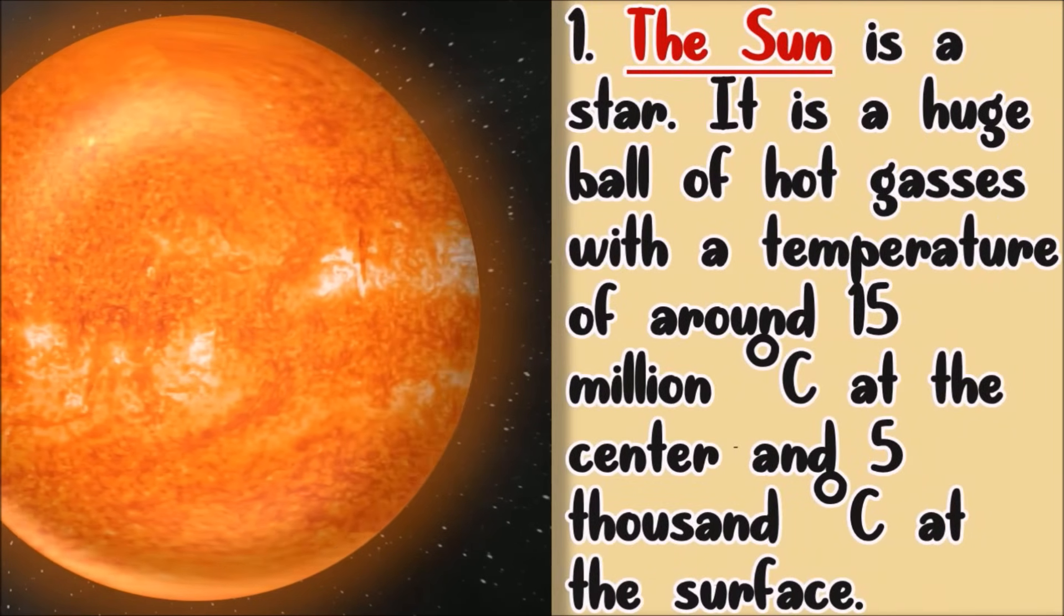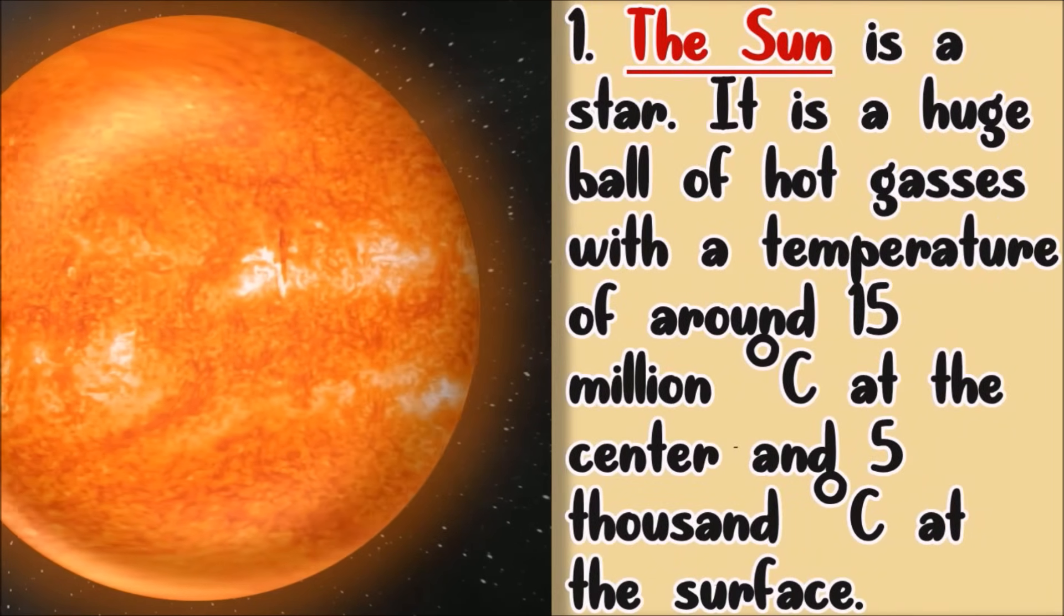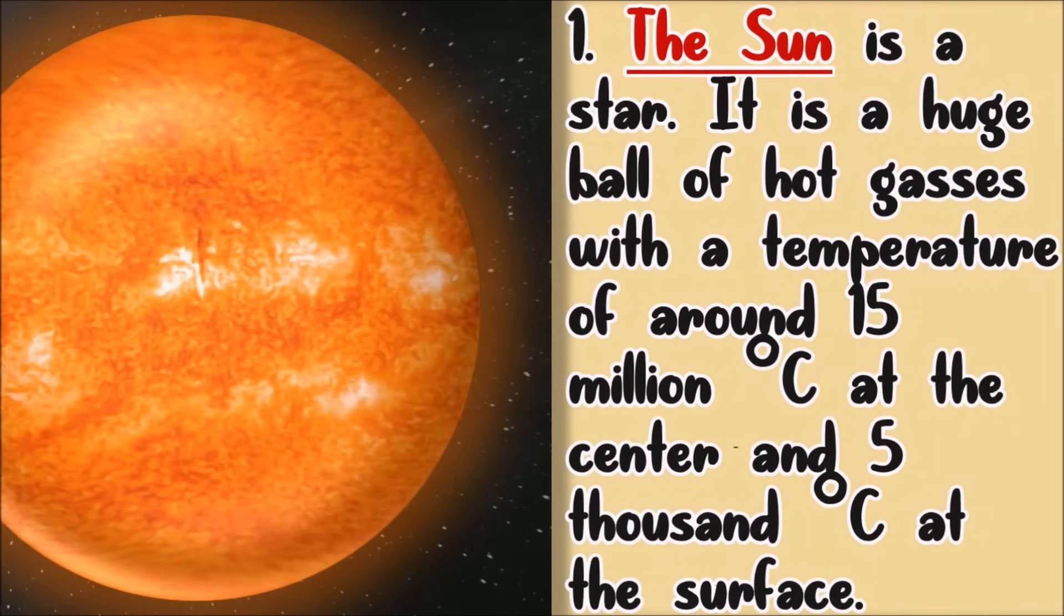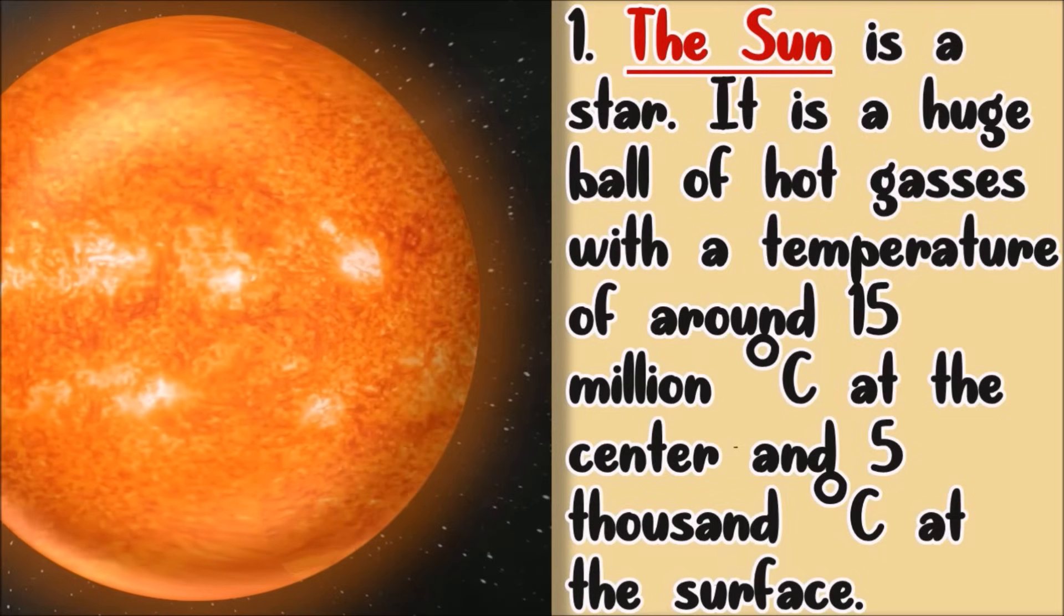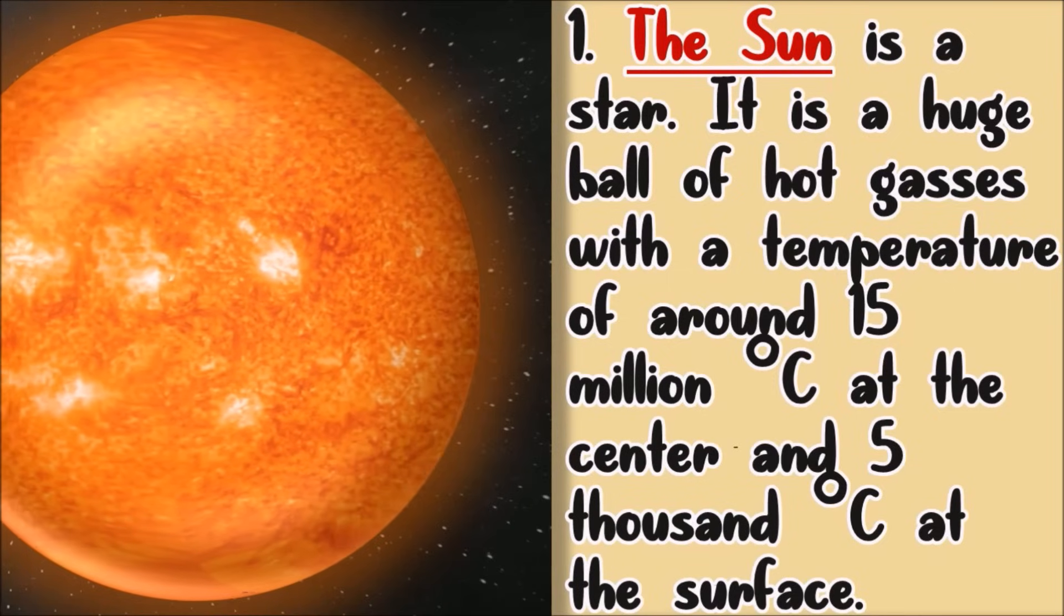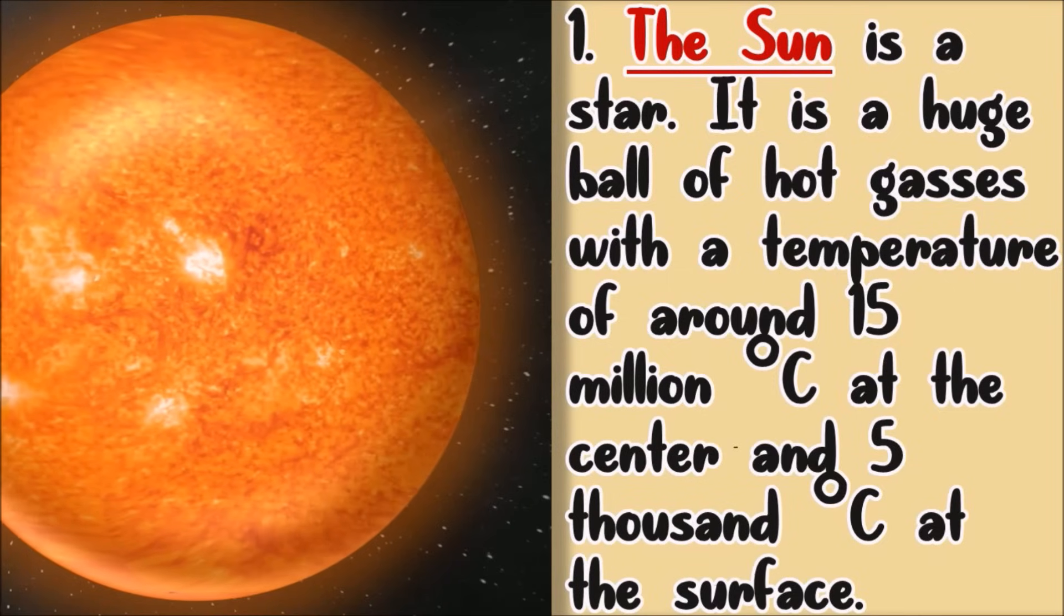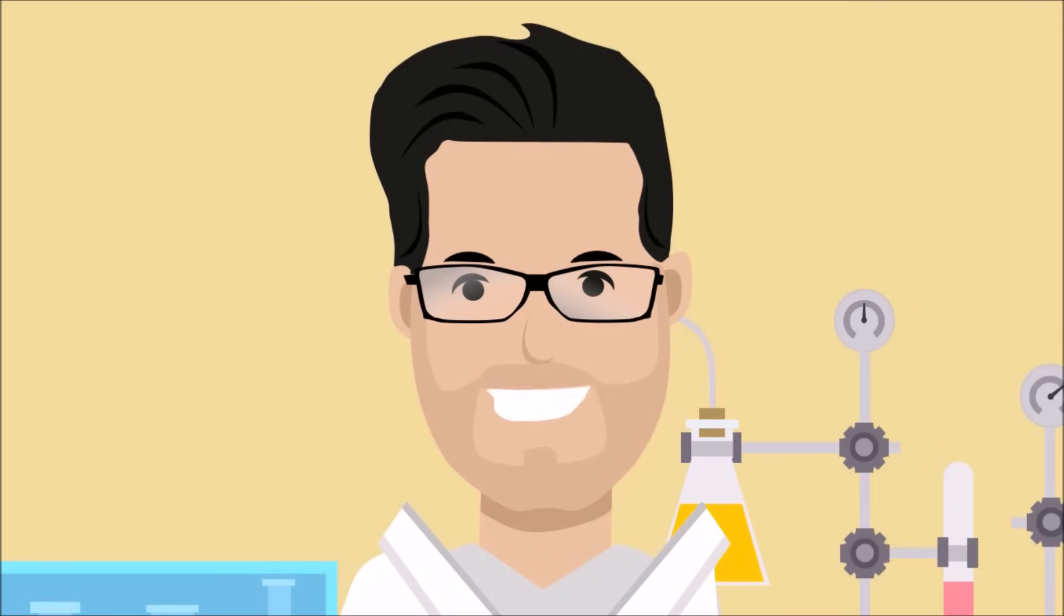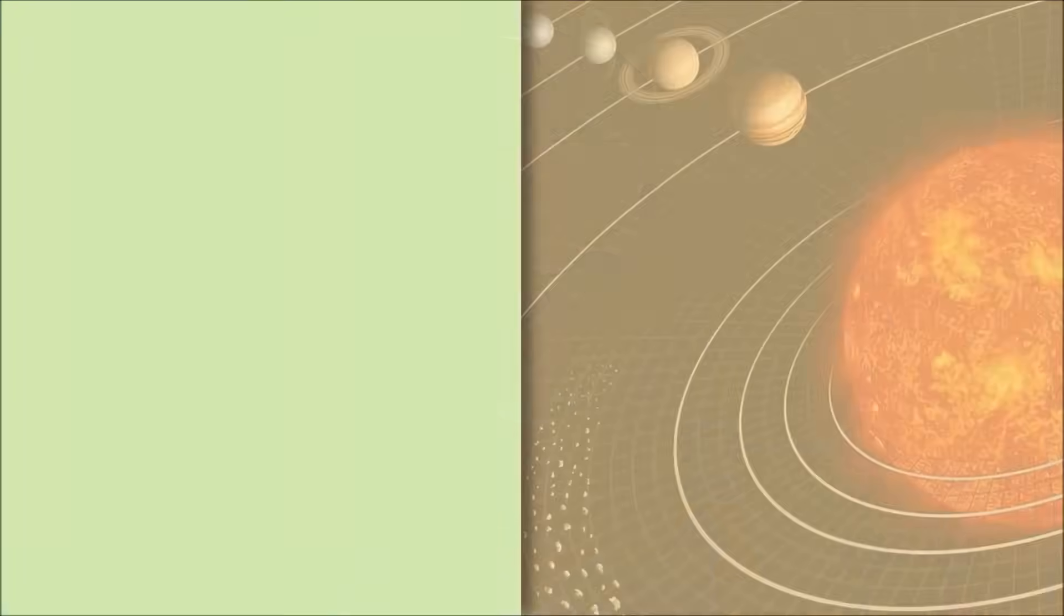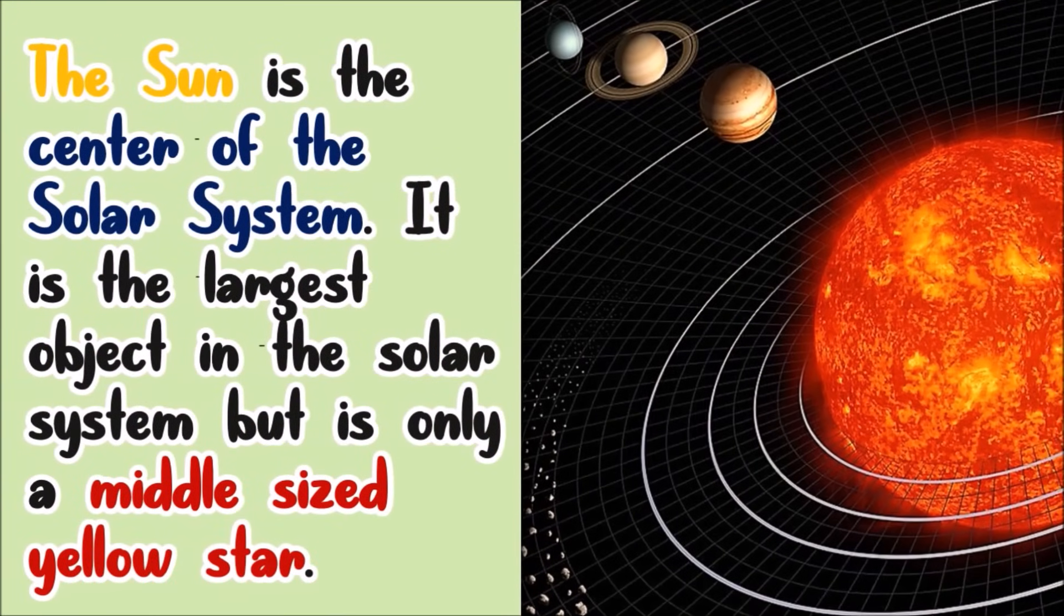The sun is a star. It is a huge ball of hot gases with a temperature of around 15 million degrees Celsius at the center and 5,000 degrees Celsius at the surface. That was really, really hot. It is also the center of the solar system.